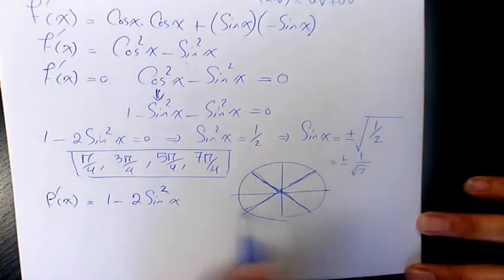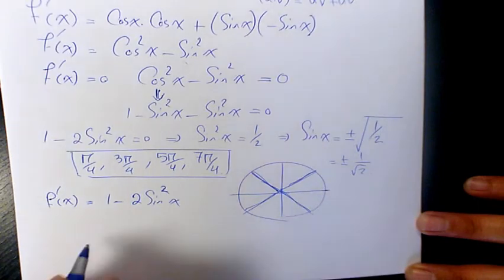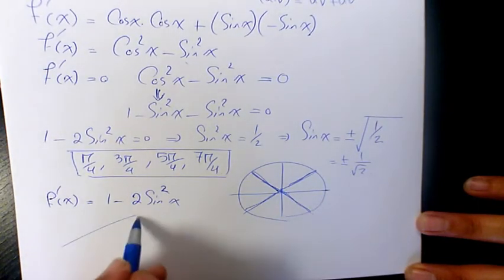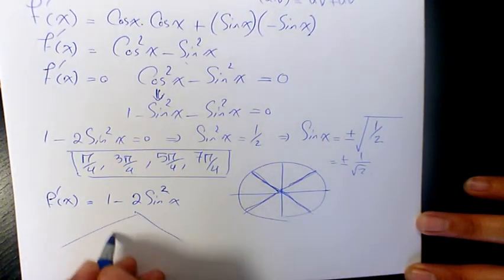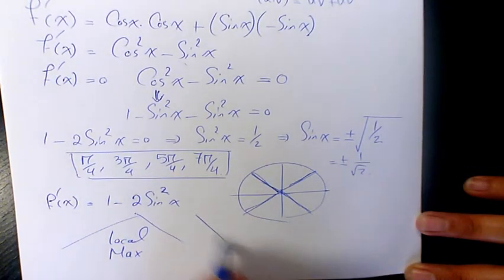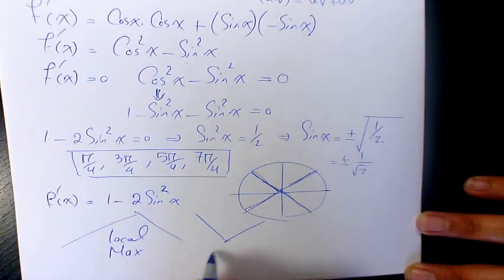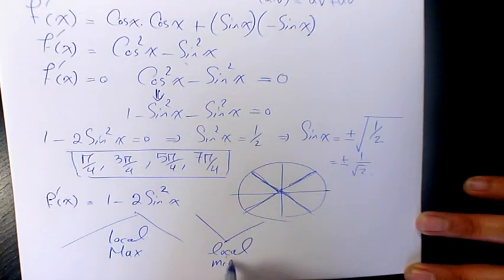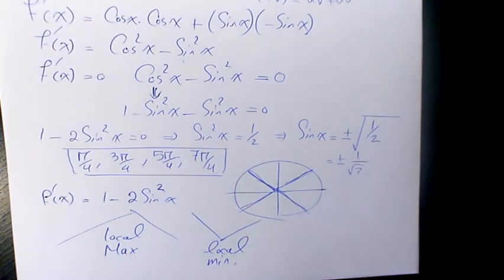If f'(x) goes from positive to negative, we're dealing with a local maximum. If f'(x) goes from negative to positive, we're dealing with a local minimum.